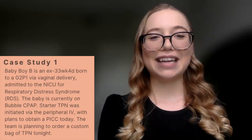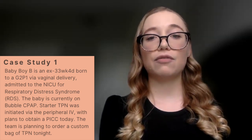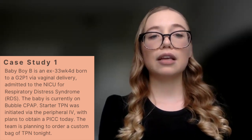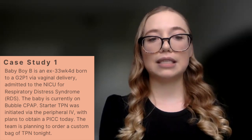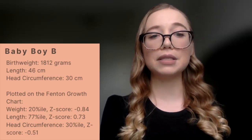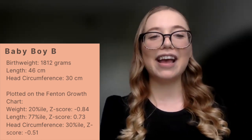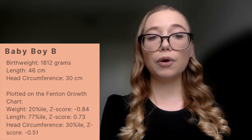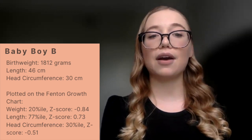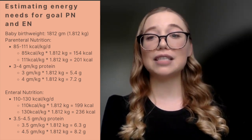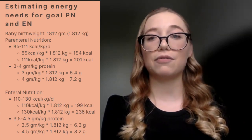Our first case study is baby boy B, an ex-33-weeker and four-day-old infant born to a G2P1 via vaginal delivery, admitted to the NICU for respiratory distress syndrome. He is currently on bubble CPAP with starter TPN initiated via peripheral IV, with plans to obtain a PICC and a custom TPN bag tonight. Birth weight is 1,812 grams, length 46 centimeters, and head circumference 30 centimeters. Plotted on the Fenton growth chart: weight at the 20th percentile (Z-score -0.84), length at the 77th percentile (Z-score 0.73), and head circumference at the 30th percentile (Z-score -0.51). For PN, goals are 85 to 111 kcals per kilogram per day with protein of 3 to 4 grams per kilogram per day. For enteral nutrition, goals are 110 to 130 kcals per kilogram per day with protein of 3.5 to 4.5 grams per kilogram per day.